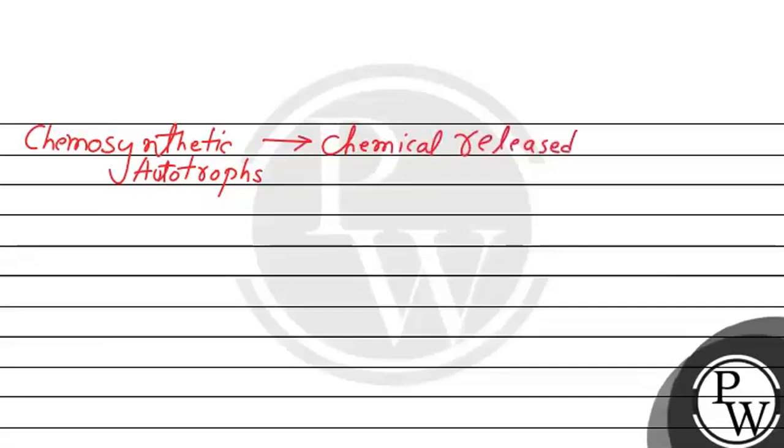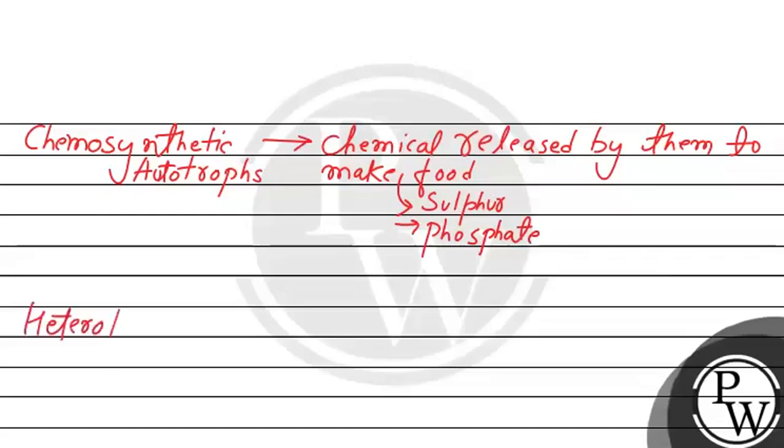Our third option is chemosynthetic autotrophs. We can take sulphur or we can take phosphate. So this sulphur, phosphate oxidize for food production. So this can't be our correct option.